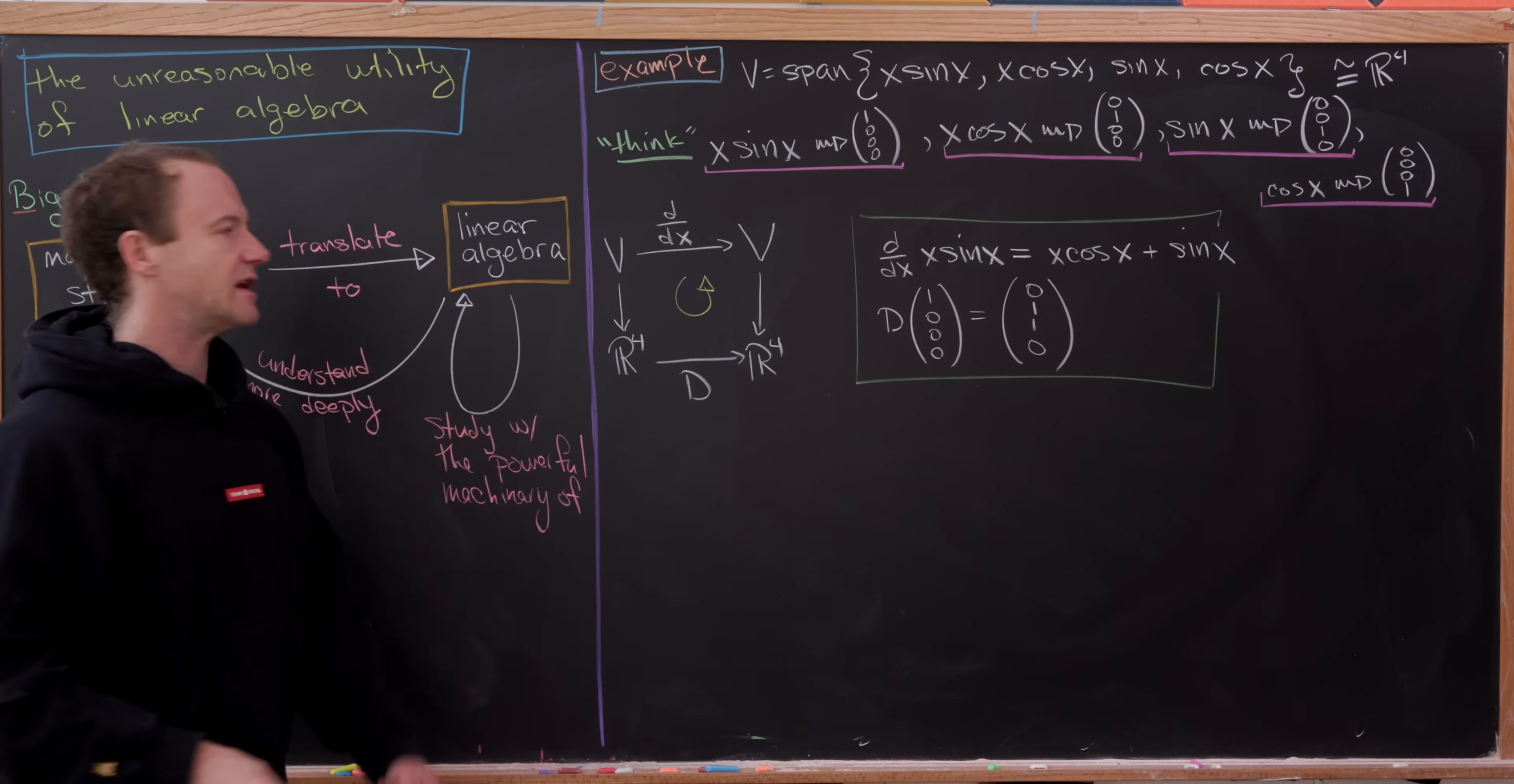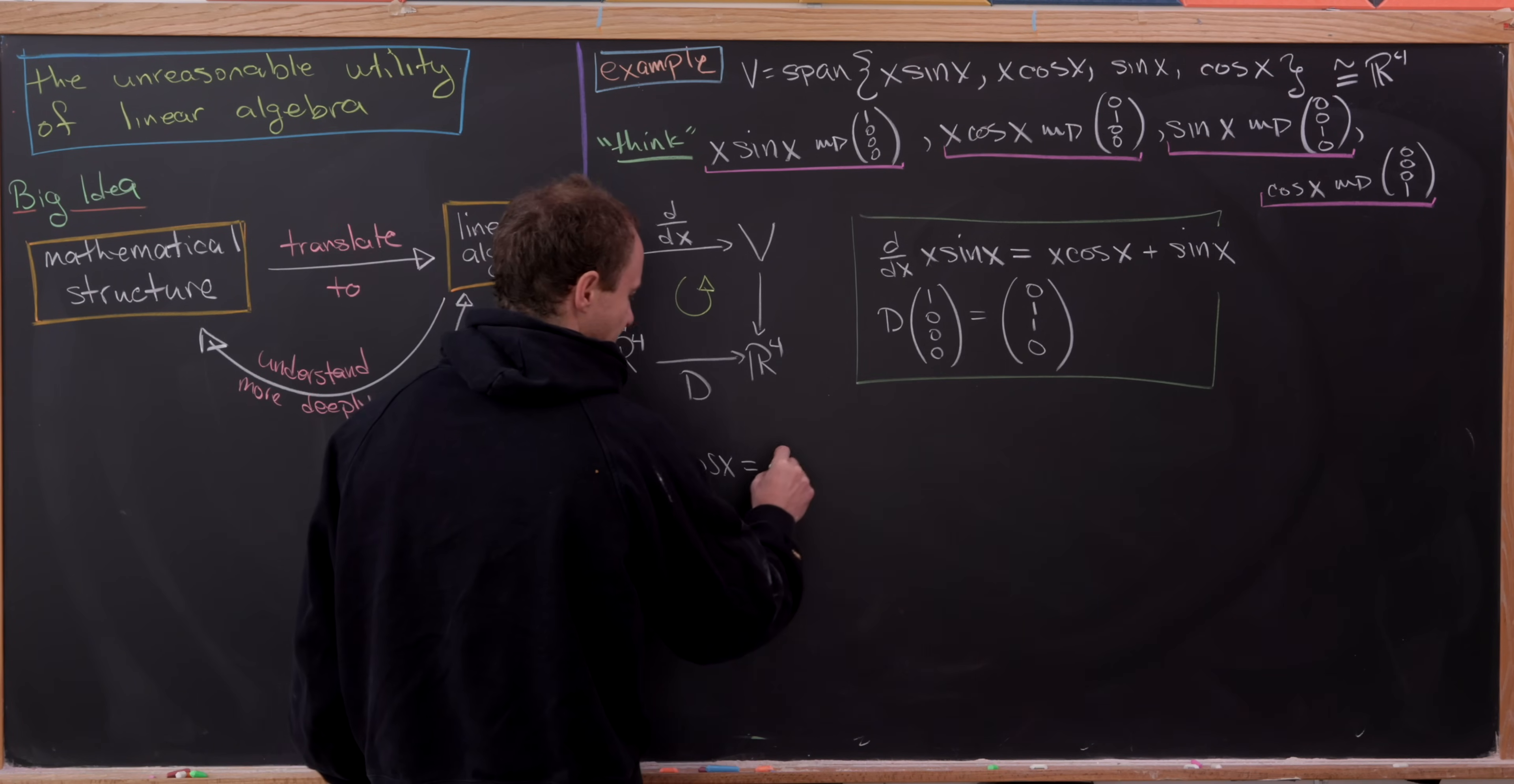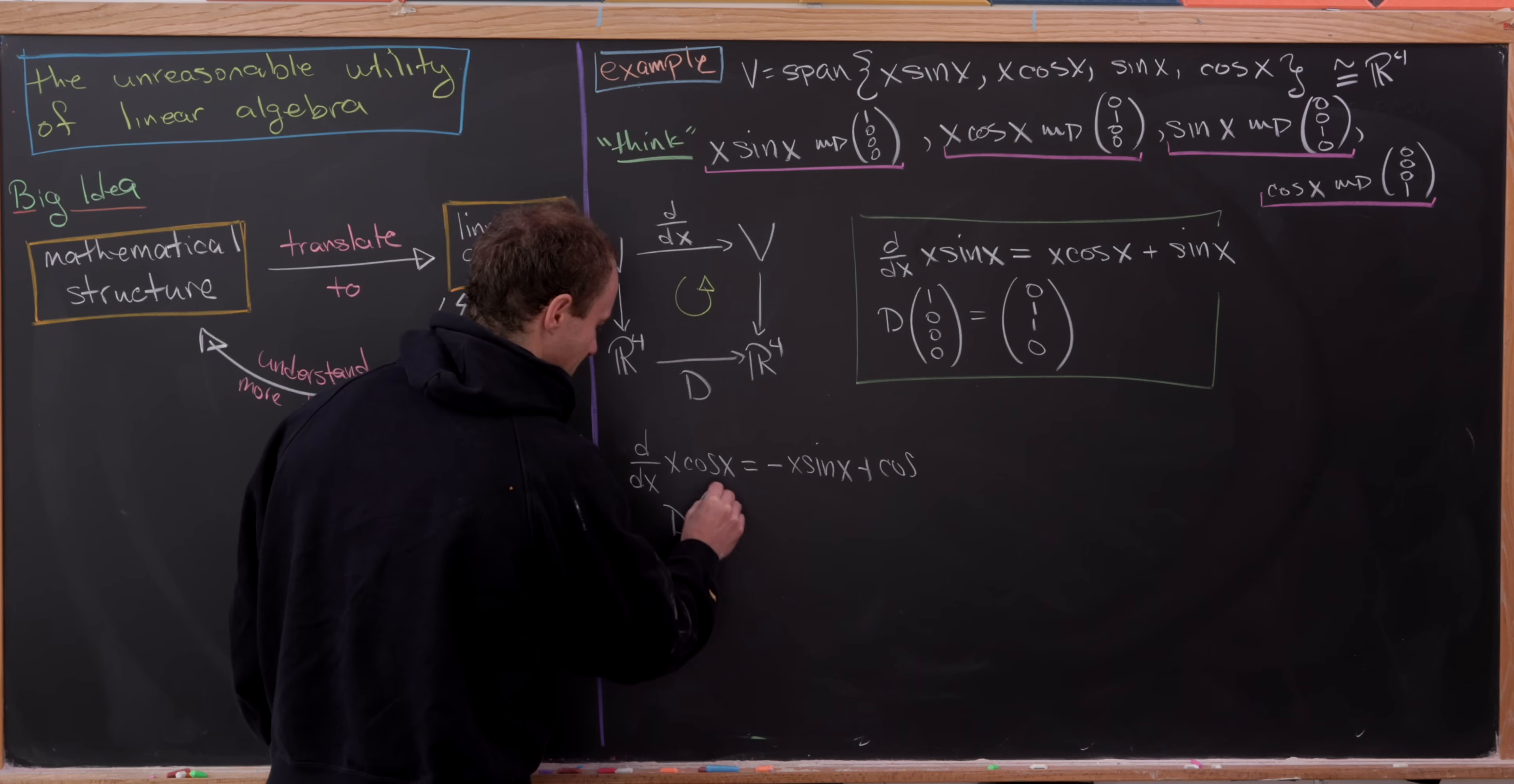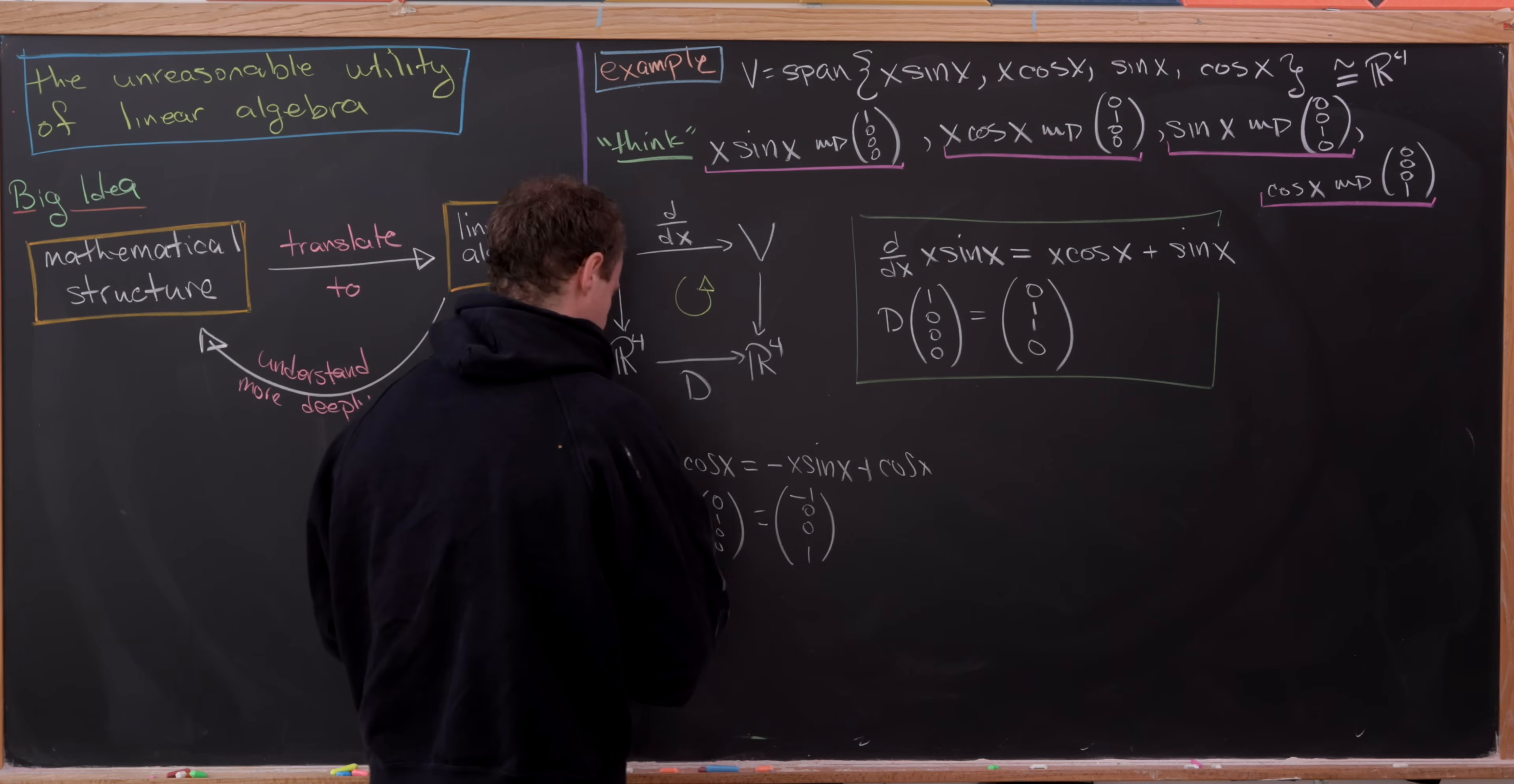Now let's look at another idea. So if we take the derivative with respect to x of x times cosine of x, again, we can use the product rule to give us minus x times sine x plus cosine of x. But if we turn this into a matrix vector setup, that means D should multiply into our vector E2, the second standard basis vector, and give us negative 1, 0, 0, 1.